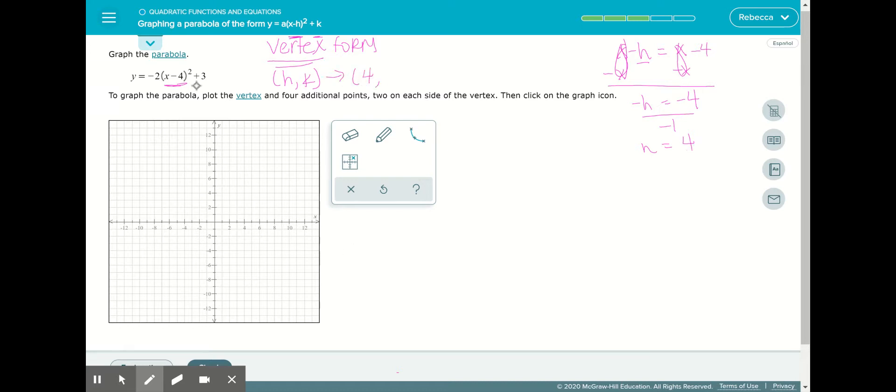k is read by looking at the value behind the x squared section, and k will be 3. So now we know our vertex value is at 4, 3.